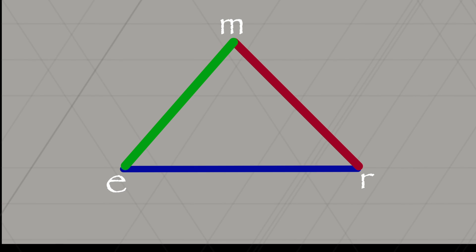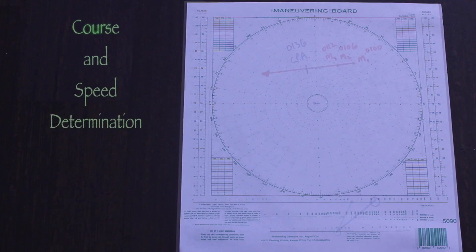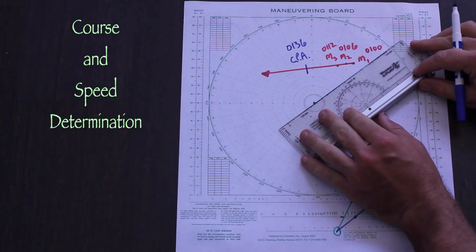So far we've dealt in the relative motion world of the maneuvering board, but now we're heading deep into the theoretical vector world. While the relative motion line is where the contact actually is, now we'll use the maneuvering board to calculate its true course and speed.